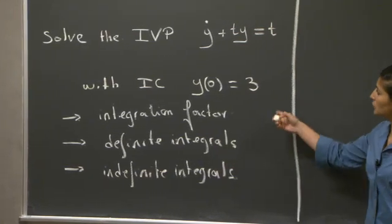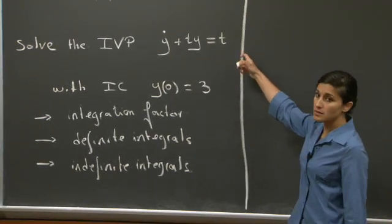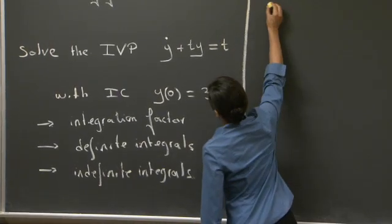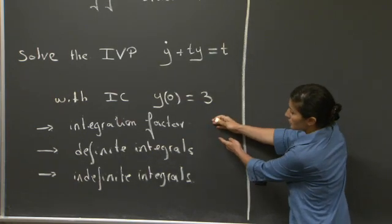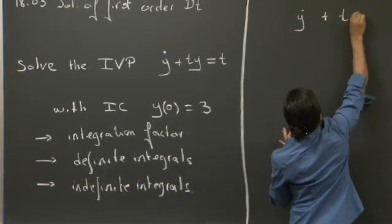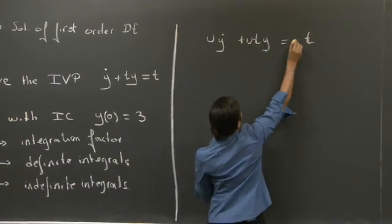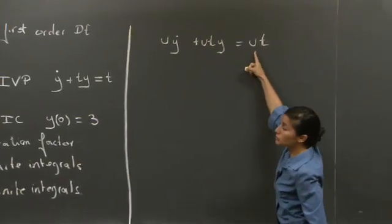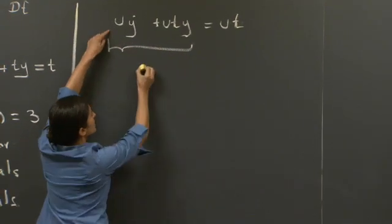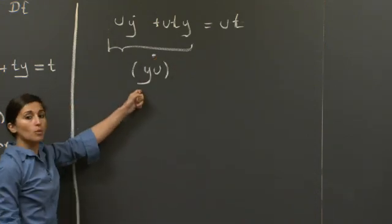Welcome back. I hope that you worked out the first part of the problem. So what are we going to do to solve this ODE? First, we need to review what is the method of integrating factor. When we use the integrating factor, we're essentially trying to rewrite our ODE in a different form by introducing a function u, with the goal of rewriting the left-hand side as the derivative of the product y·u.